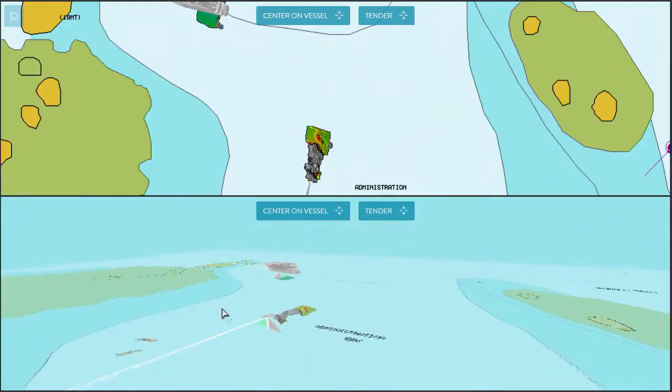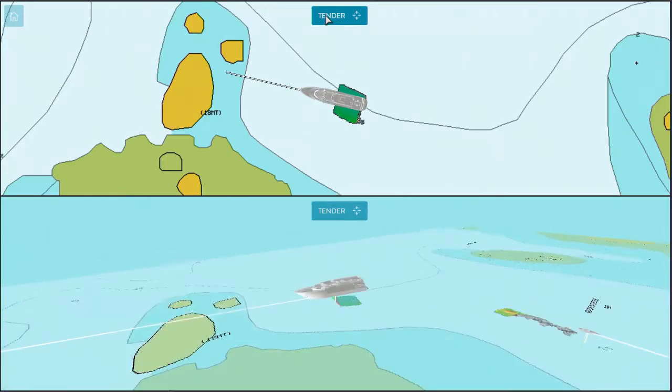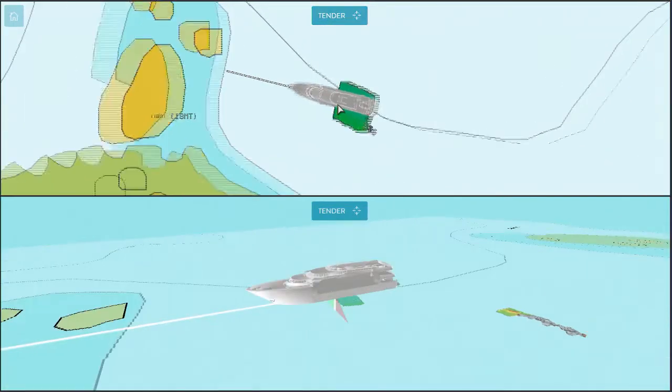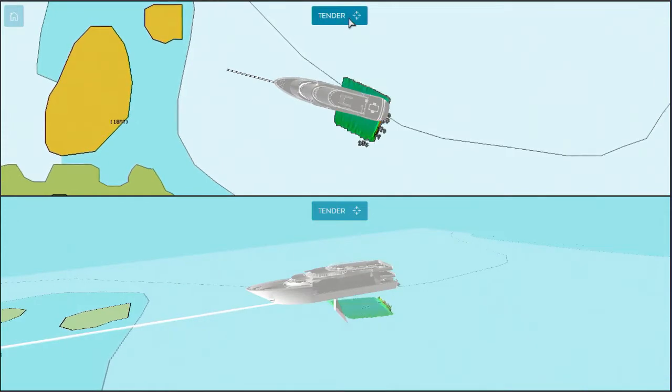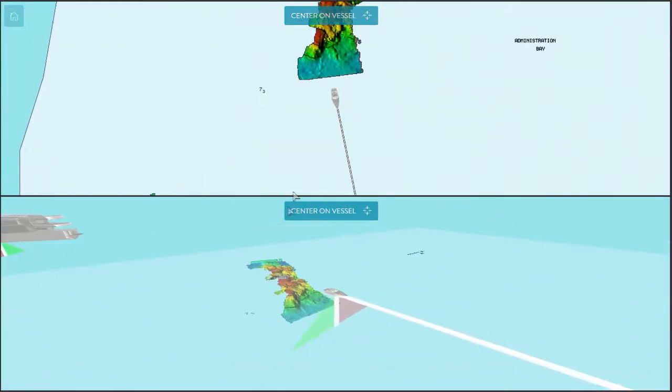However, to be sure that it's safe for our yacht, crew and guests, we've sent out our tender equipped with a Wasp W3 with CDX to map the bay ourselves instantly and in real time to make sure our chosen anchorage is a safe one.